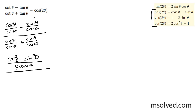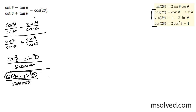And then on the bottom, I'm going to get cosine squared theta plus sine squared theta, all over sine theta cosine theta. These cancel out — the sine theta cosine theta terms cancel — and the bottom is equal to 1. So that cancels out, and you're left with cosine squared minus sine squared theta.